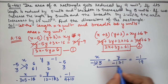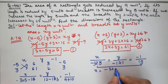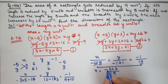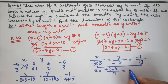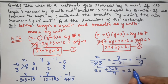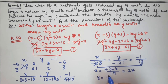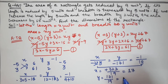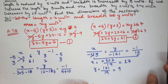Simplifying: x upon minus 323, y upon minus 171, and minus 1 upon 19. Comparing x: x equals minus 323 upon minus 19, which gives x equals 17. Comparing y: y equals minus 171 upon minus 19, and simplifying gives y equals 9. So the value of x is 17 and the value of y is 9.